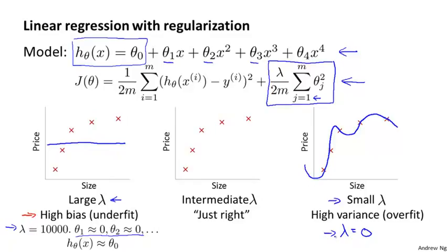If lambda is equal to 0, we're just fitting it without regularization, so that overfits the hypothesis. And it's only if we have some intermediate value of lambda — neither too large nor too small — that we end up with parameters theta that give us a reasonable fit to this data.